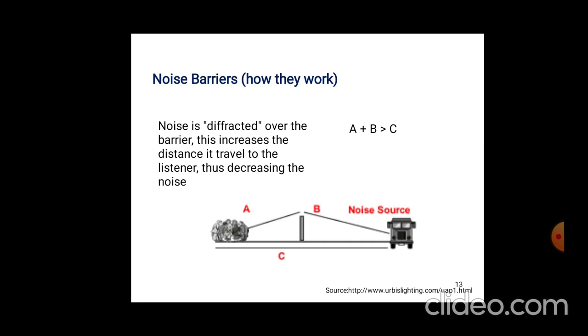How noise barriers work: noise is deflected over the barrier, which increases the distance it travels to the listener, thus decreasing the noise. The barrier takes some time and reduces intensity toward the receiver. A plus B is greater than C—this is the formula.